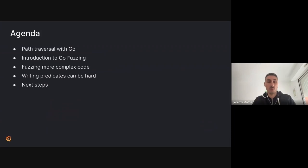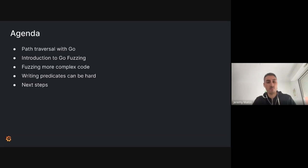What we will start with is: even though Go has good secure defaults, we'll see that it's still possible to suffer a path traversal. We'll talk about Go fuzzing and how it can help detect path traversal. Then we'll try to fuzz more complex code, see that writing predicates needed for fuzzing can be hard, and follow up with next steps on how to get more value out of Go fuzzing.